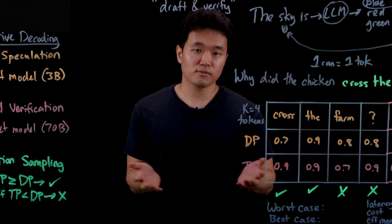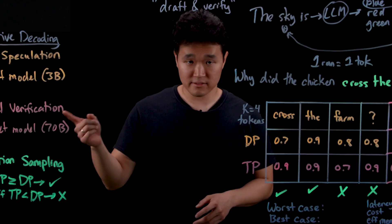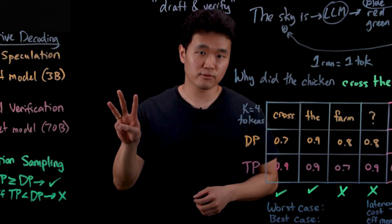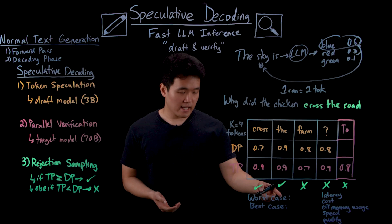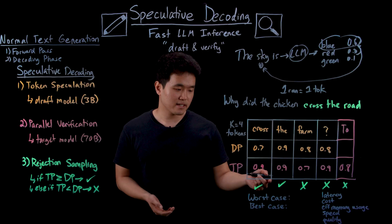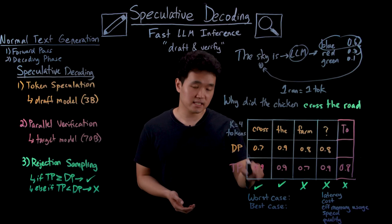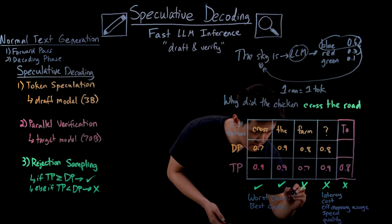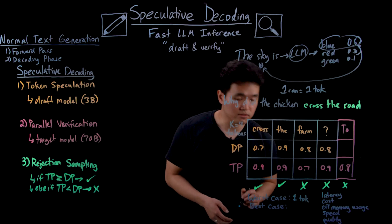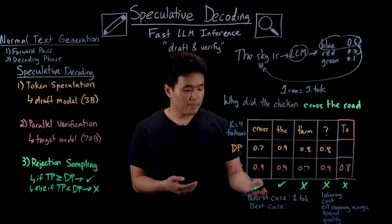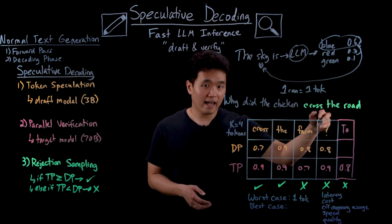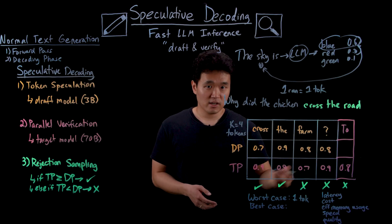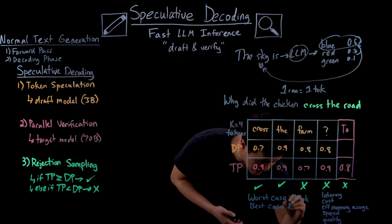So what just happened? Well, with one single forward pass of the target model, we were able to generate three new tokens for the price and time of just one. In the worst case scenario, where we hypothetically happened to reject the very first token, we're still able to generate one token from the target model's correction. In the best case scenario, where we just so happened to accept every draft token and sample one more from the target, we can get up to k plus one new tokens per round.